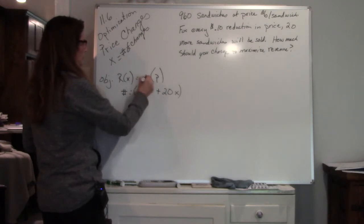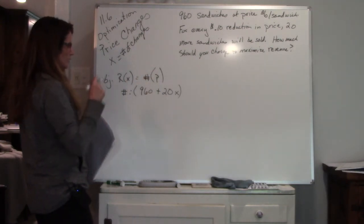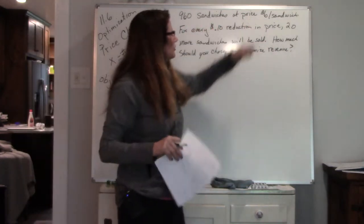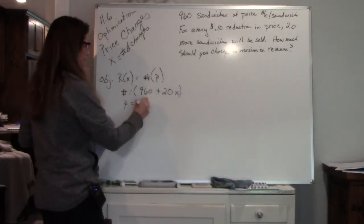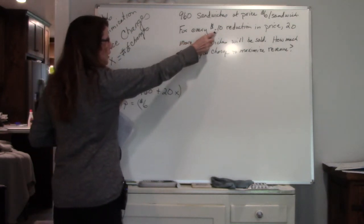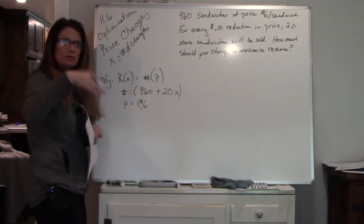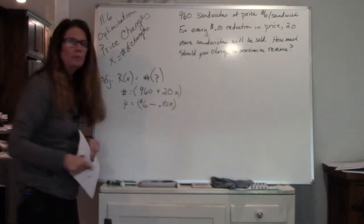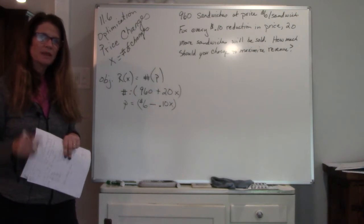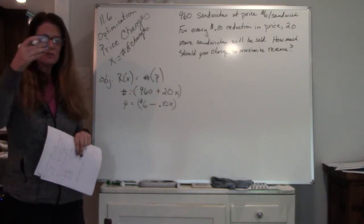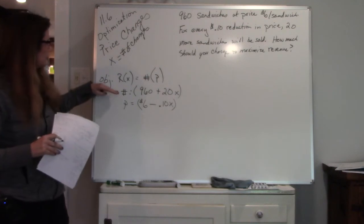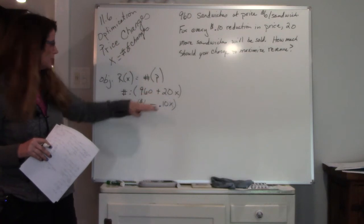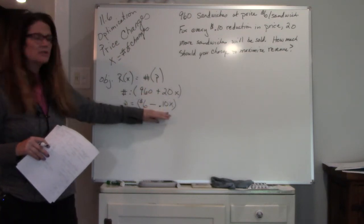So I'm going to change this so that we have the same terms. The price is, we started with $6 a sandwich, and now we're reducing the price by 10 cents. So reducing means we are subtracting off 10 cents for every time we change the price. Every time the price changes, it's going to go down by 10 cents. So notice my number equation, the number of the sandwiches. The price equation is the price.